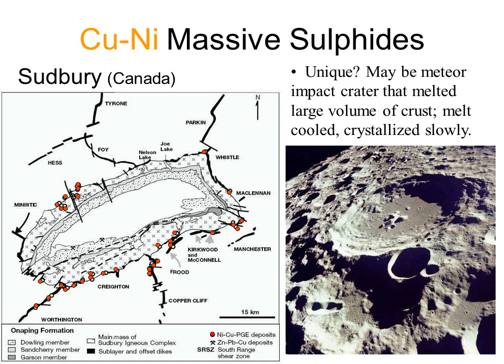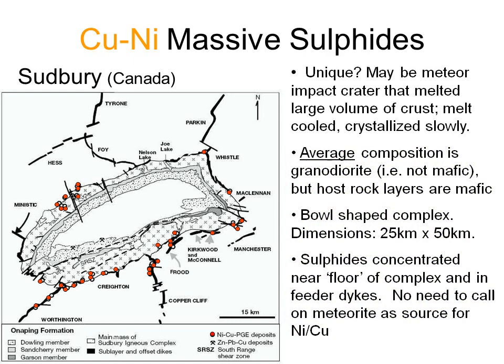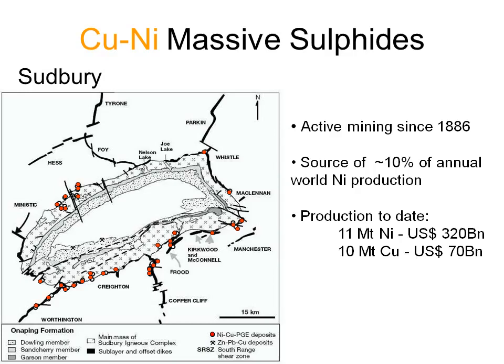There's controversy over the meteorite impact theory, with opponents pointing out that Sudbury is developed on a pre-existing major crustal suture, and that all impact craters, even from glancing hits, are circular, not kidney-shaped like Sudbury. In defence, meteorite impact supporters provide evidence that later deformation may have flattened the complex — the intrusion is, after all, two billion years old — and there are small structures called shatter cones, indicative of a sudden impact shock. The average composition of the entire intrusion is granodioritic, but the layers hosting copper-nickel mineralisation are mafic. The massive sulphides are developed on the floor of the bowl-shaped complex, so the mines rim the complex. There's been active mining at Sudbury since 1886; it currently produces about 10% of the world's nickel supply and has to date produced $320 billion worth of nickel.